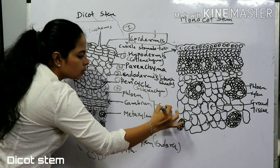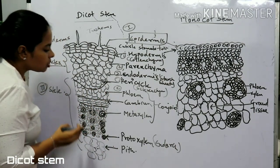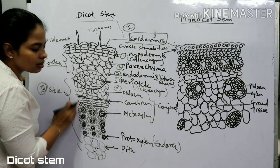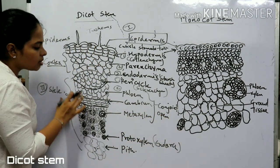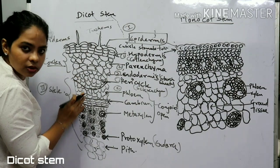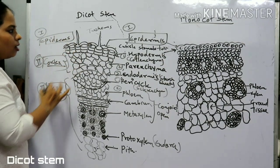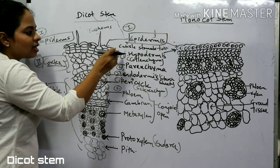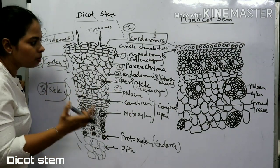The vascular bundles are conjoint — phloem and xylem lie on the same radius. Phloem is on the outer side and xylem on the inner side, with cambium in between, so it is known as an open vascular bundle. Therefore, the vascular bundles in dicot stems are conjoint, open, and collateral. In the center is the pith. To summarize: epidermis (cuticle, stomata, trichomes), cortex (hypodermis, parenchyma, endodermis), and stele (pericycle, vascular bundles, pith).